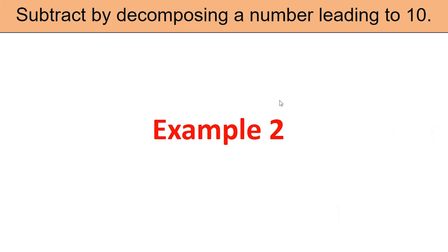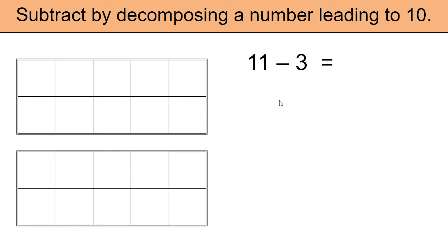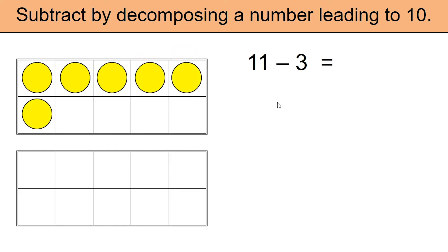Let's look at another example — we need to remove 3 from 11. Set up the 11 using both tens frames. Count with me: 1, 2, 3, 4, 5, 6, 7, 8, 9, 10, 11.